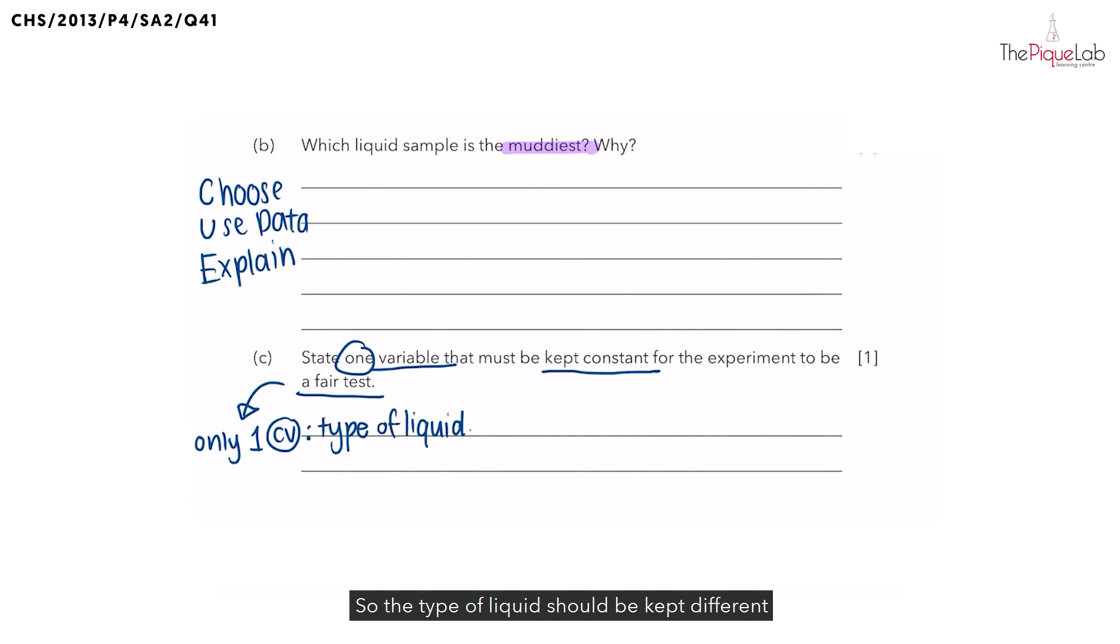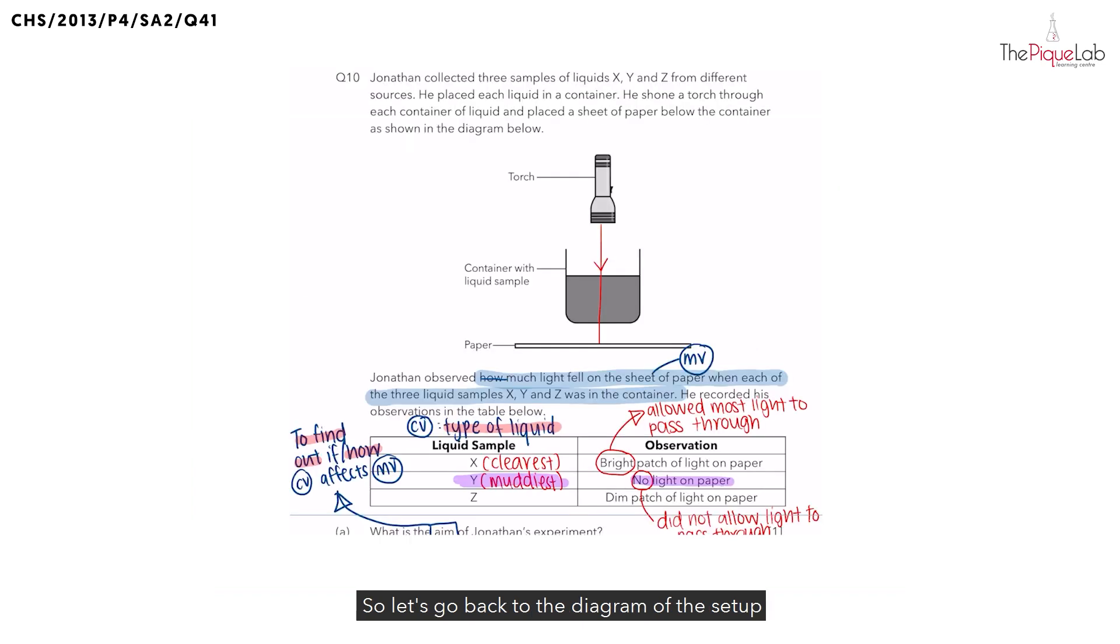So the type of liquid should be kept different, but then the other variables in the experiment should be kept the same or kept constant. So let's go back to the diagram of the setup to help us with this. Now, other than the type of liquid, what other variables should be kept constant?